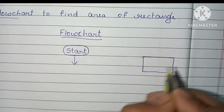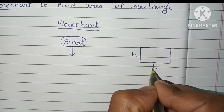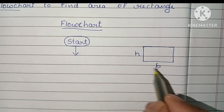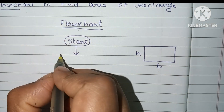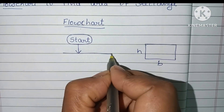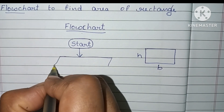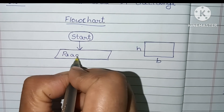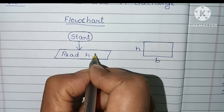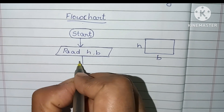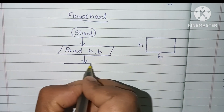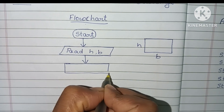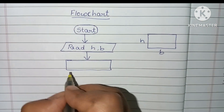To find the area of a rectangle, first we have to read the height and base of the rectangle. We read H and B, that is height and base. In the next step, we draw a parallelogram shape and within that we write the read statement for H and B.